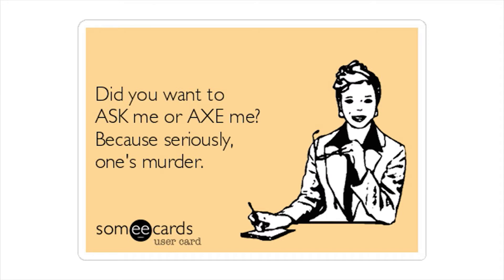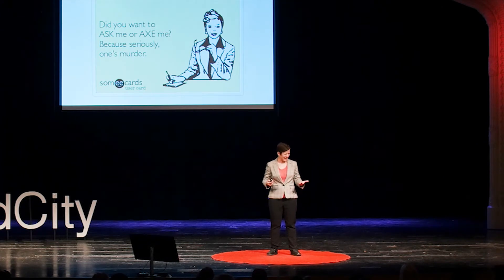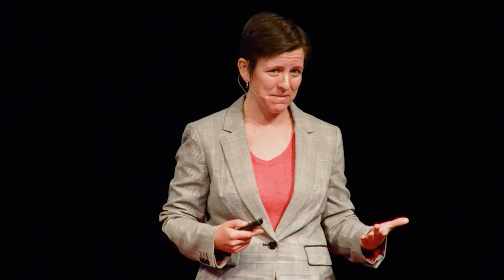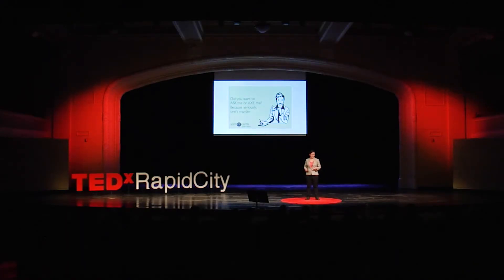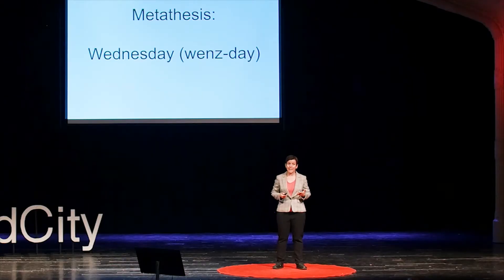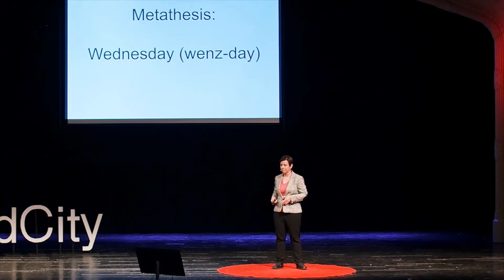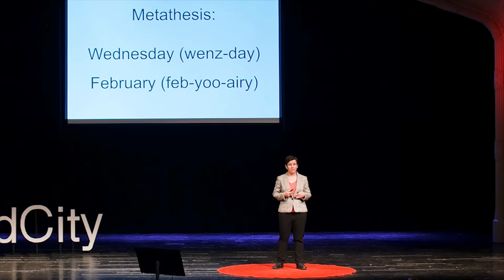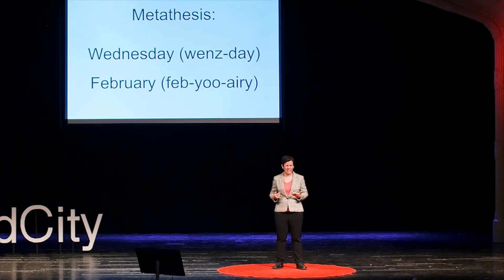Let's look at another example: pronouncing 'ask' as 'axe.' And you might think, well, it's spelled 'ask' — surely that's the correct pronunciation. But keep in mind, in English there's very little relationship between how we spell things and how we pronounce them. There's a common linguistic process called metathesis where the sounds inside a word get mixed around. This happens in English and many other languages all the time. If you say 'Wednesday' rather than 'Wednessday,' or 'February' rather than 'Febr-uary,' then you participate in metathesis too. And 'ask' and 'axe' are just another example of this process.